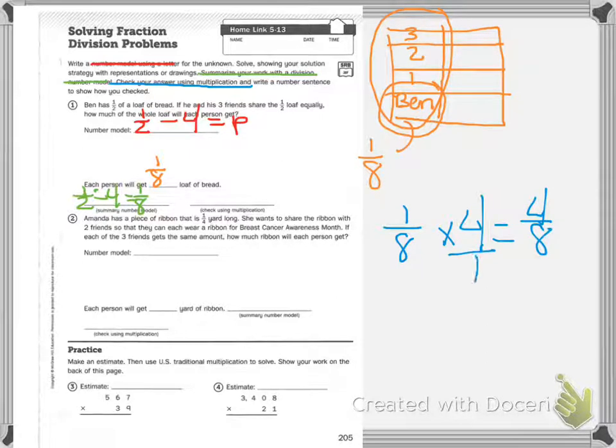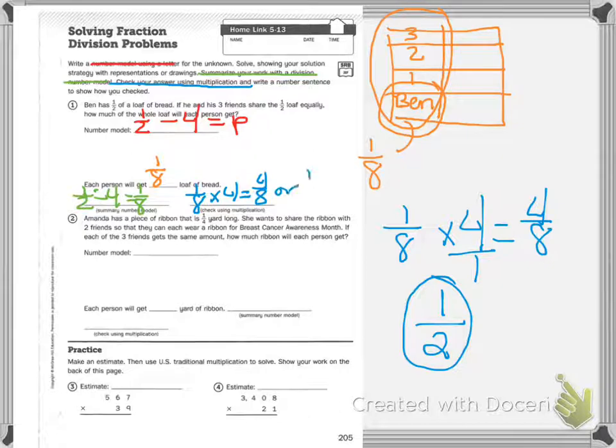Because I can write four over one. One times four is four. Eight times one is eight. And then I can reduce. Four goes into four once, four goes into eight twice. Did I get my half loaf? You bet. So one eighth times four equals four eighths or one half.